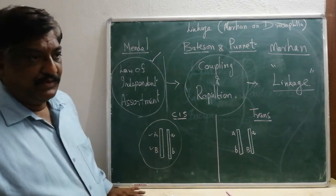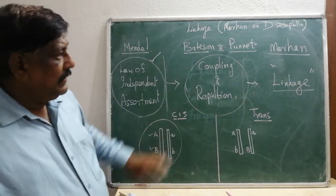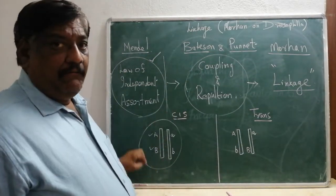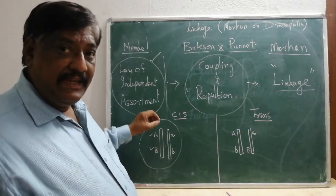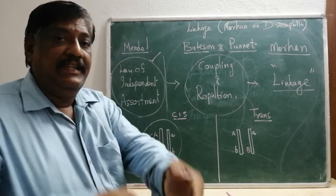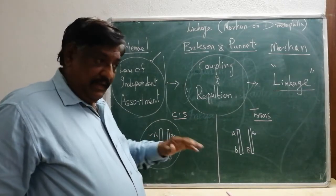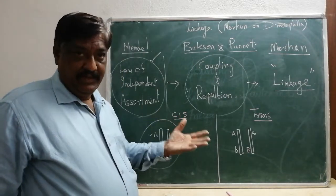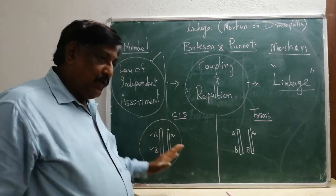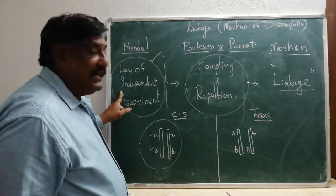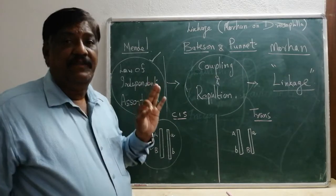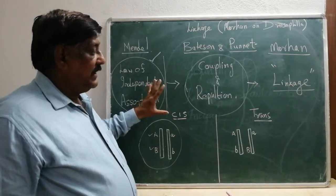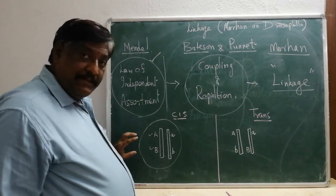Now coming to the point — when Morgan did his experiments, he found that when both dominant genes are present in the same chromosome, they tend to go together. Because they go together and don't get separate, the parental types are produced more in number. So Mendel's Law of Independent Assortment is not followed here. This is an exception, and this is what we are going to study under linkage.